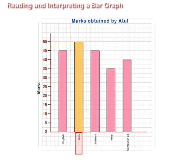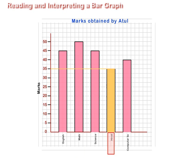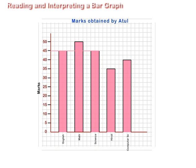B. Atul scores maximum marks in Maths. C. Atul scores the least marks in Hindi. D. Atul scores equal marks in English and Science. E. Atul scores 40 marks in Computer Science.